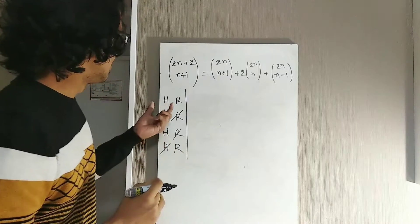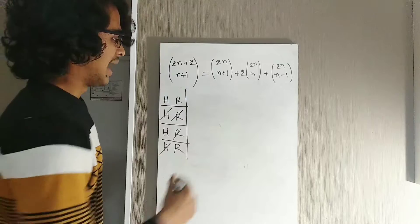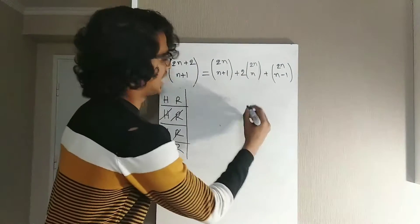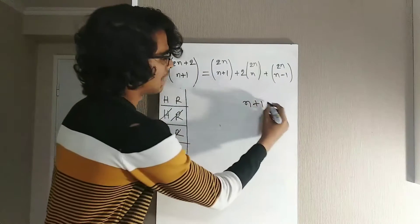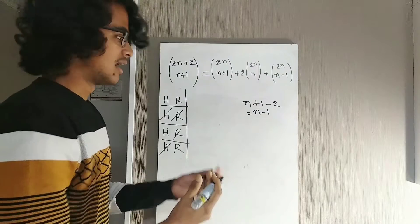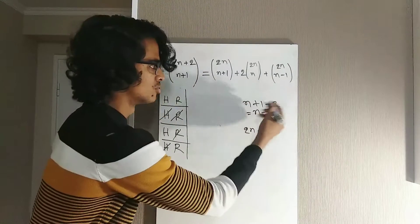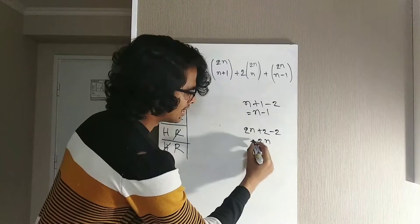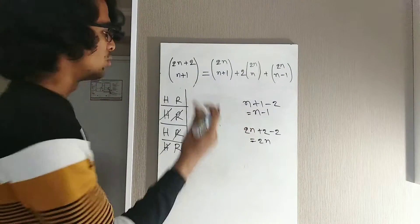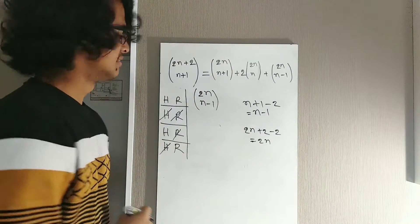Case 1: Both Harry and Ron will be part of the team. As Harry and Ron are both in, we still need to find more players to fulfill the team. We need n+1 players total, and we already have two, so we need to choose n-1 more players. We choose from the remaining 2n players in the squad, giving us C(2n, n-1) different ways.